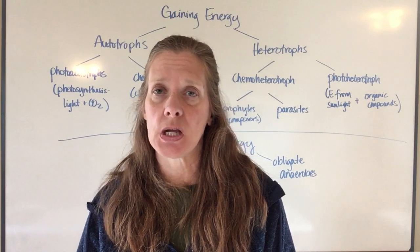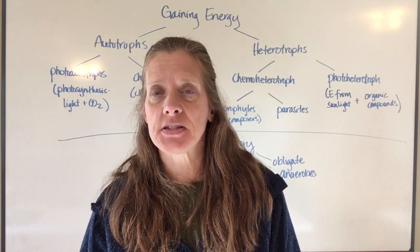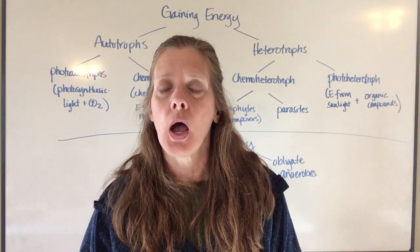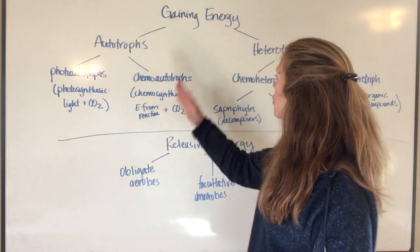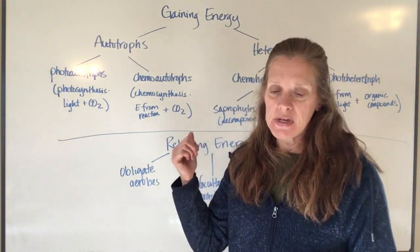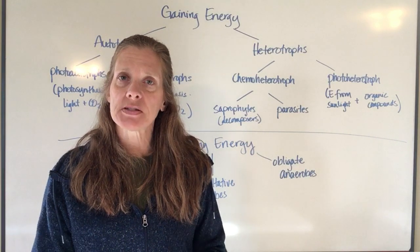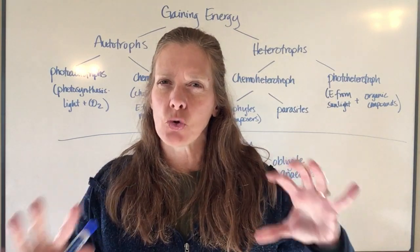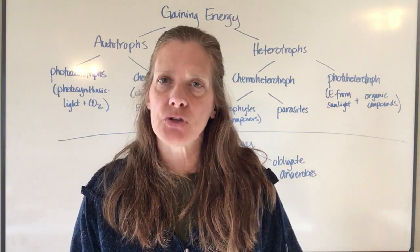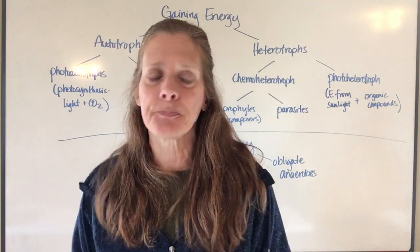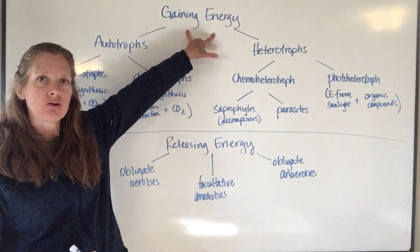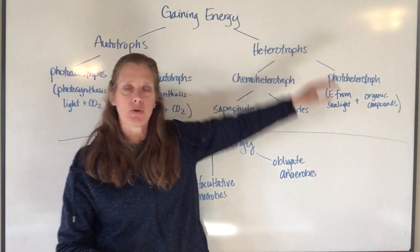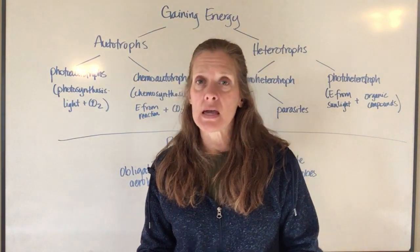Gaining energy means that you've got to take it in somehow or produce it for yourself. As we have said several times before, bacteria can either be autotrophs or heterotrophs. The author of your book uses a table to organize this information, but branching diagrams will help you visualize how things are broken down. So there are two ways to gain energy: as an autotroph or as a heterotroph. An autotroph means they're going to make their own energy.